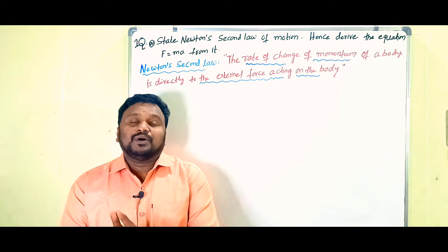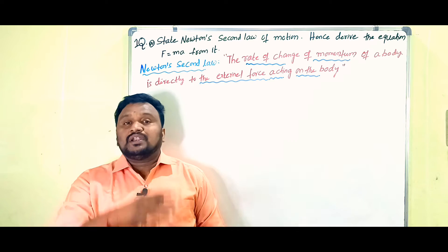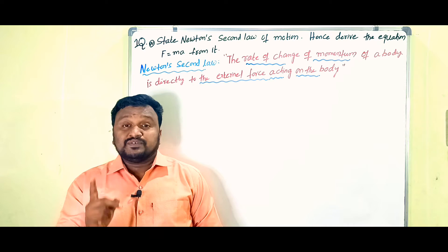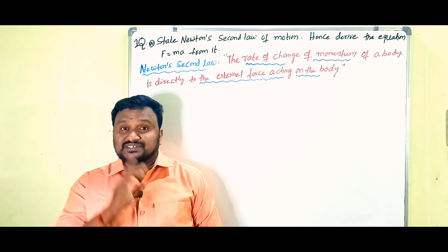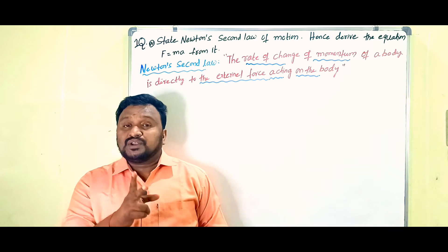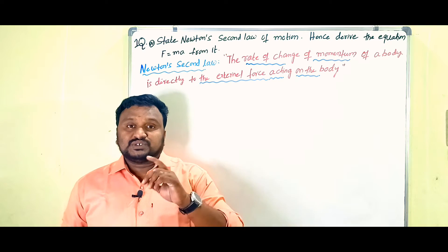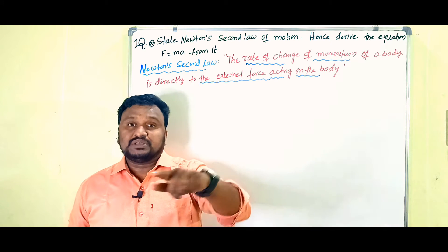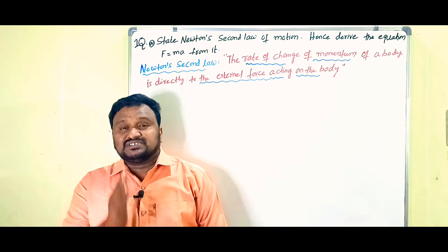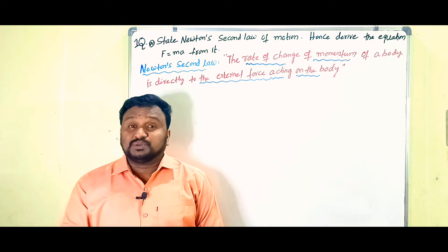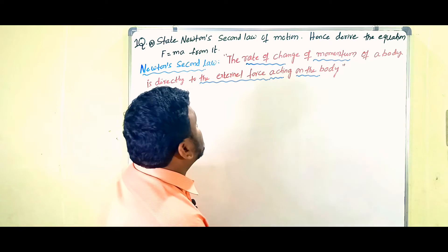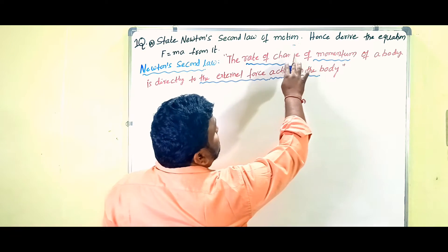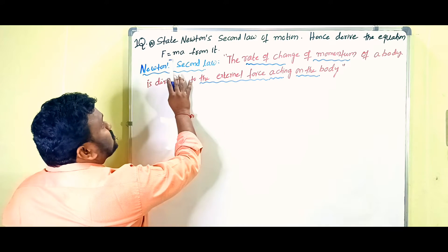In this video, I am going to explain one of the important long answers in the chapter of Laws of Motion that belongs to First Year Physics. I am going to explain the first long answer, which has two parts. The first long answer question is: state Newton's second law of motion. Hence, derive the equation F equals MA from it.